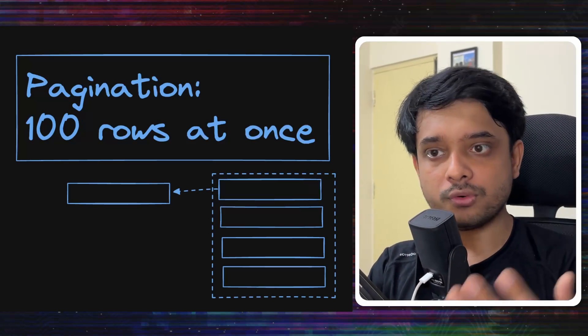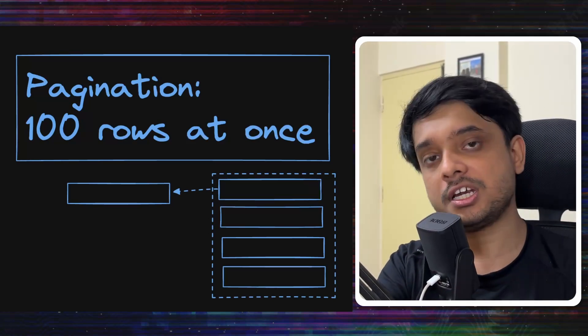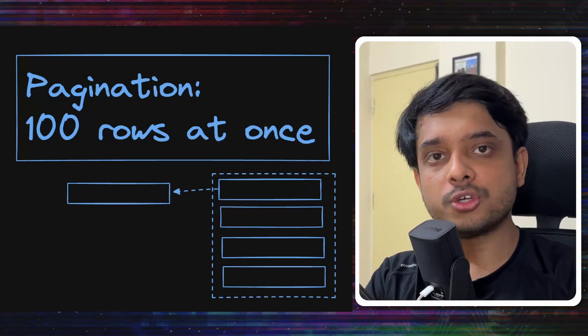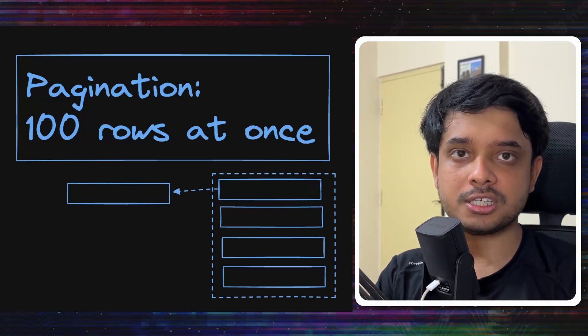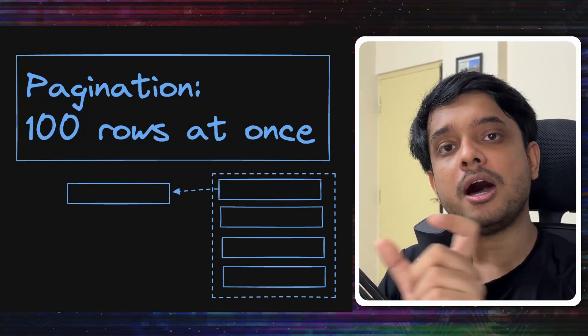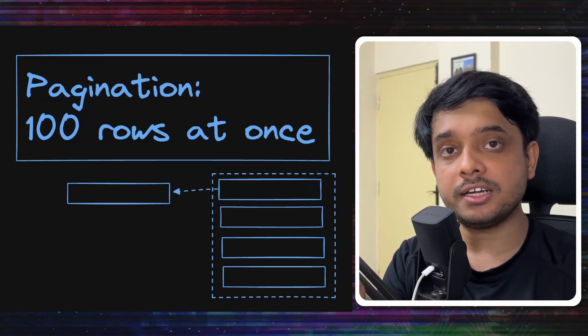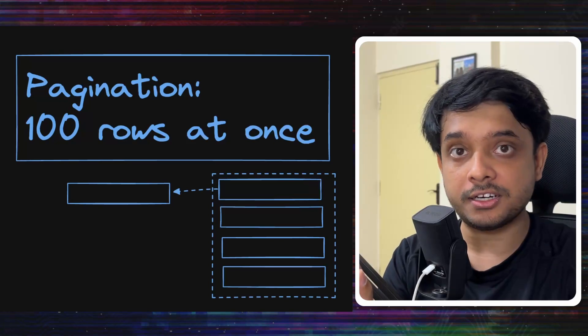If a lot of rows is requested, we can return only a particular number of rows at once instead of returning everything at once. So let's say there are 400 rows that are requested. We can send 100 at once and then send a marker along with it.